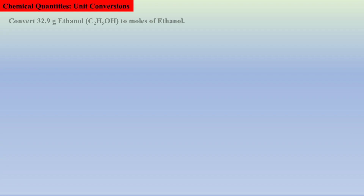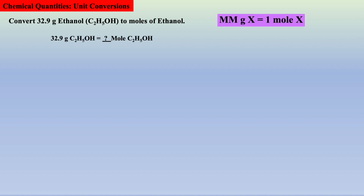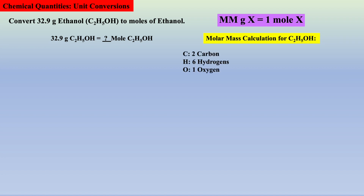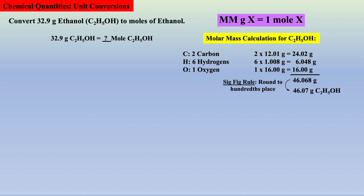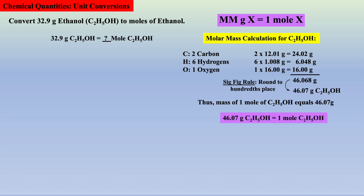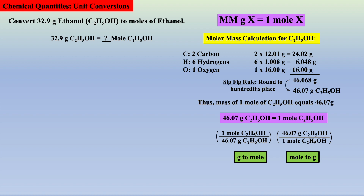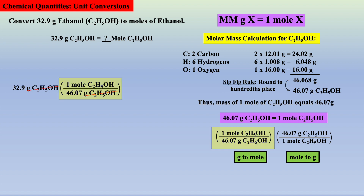In the next example, we have to convert 32.9 grams of ethanol to moles of ethanol. Recall, 1 mole of x is equal to the molar mass of x. We need to develop a new skill: calculating the molar mass of any compound with the aid of the periodic table. Ethanol has two carbons, six hydrogens, and one oxygen in the formula. Multiply the molar mass of each element found on the periodic table and add these up to afford the molar mass of ethanol, which is 46.07 grams after rounding to the hundredths place. Thus, 46.07 grams of ethanol equal 1 mole of ethanol. Starting from the given grams of ethanol, we use the grams to moles conversion factor, grams of ethanol cancel, giving the desired units of moles of ethanol, and correcting for sig figs we have our final answer.